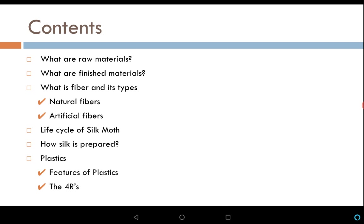Let us take a look at the contents. We will talk about raw materials and finished materials — what they are. Then we will come to what is a fiber and the types of fibers. Basically there are two types: natural fibers and artificial fibers. Artificial fibers are also termed synthetic fibers, which is the main point of this episode. Next we will take a look at the life cycle of the silk moth and how silk is prepared from the cocoons.